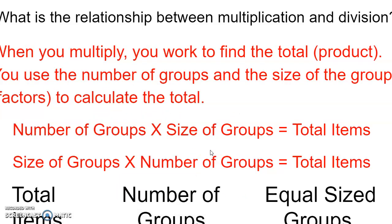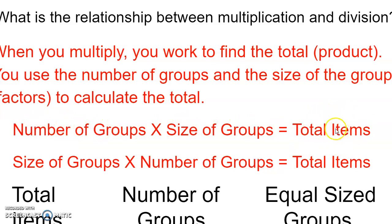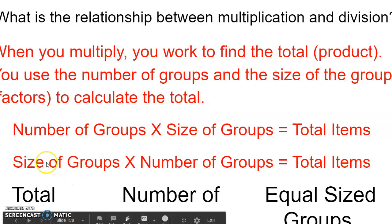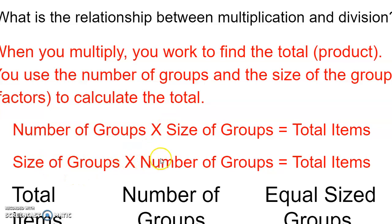So we went over the parts. When you multiply, you work to find the total. The total is missing, and we call that total the product. You use the number of groups and the size of the group — which are the factors — to calculate the total. So you could either take the number of groups times the size of the groups to get the total, or the commutative property tells us we can flip these factors. The order does not matter — you can start with the size of the groups, multiply by the number of groups, to get your product.